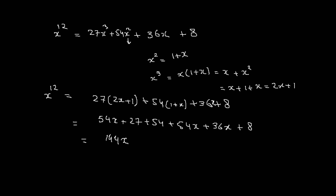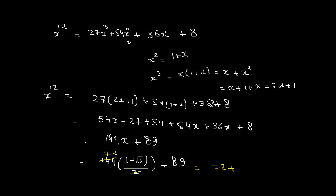So x¹² equals 144x plus 89. Since x equals (1 plus √5) over 2, we substitute: 144 times (1 plus √5)/2 plus 89 equals 72(1 plus √5) plus 89 equals 72 plus 72√5 plus 89. Therefore x¹² equals 161 plus 72√5. That is our answer.